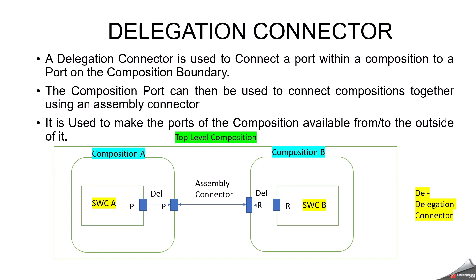It means to make the ports of the composition available from the outside of it. Here you can see the complete example. Finally, this will be created as an assembly connector, and here we will have a delegation connector — noted as 'del'. As we discussed in our previous video on the difference between composition and component, when you do the flattening, all the compositions will be removed. Finally, the component connections will be visible, and that is generally called ECU extraction.